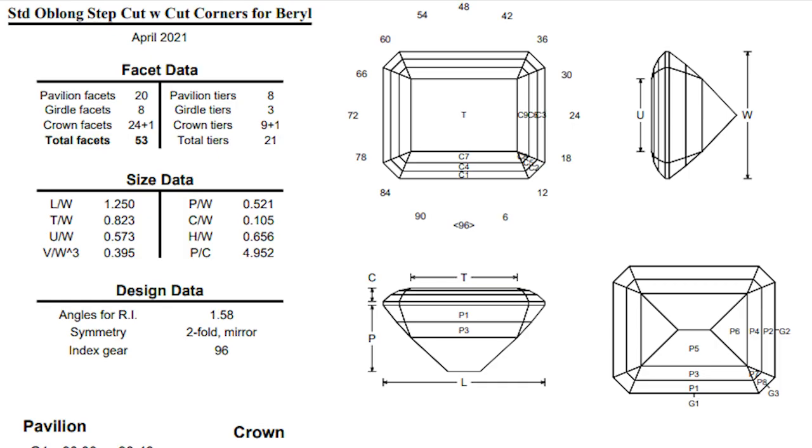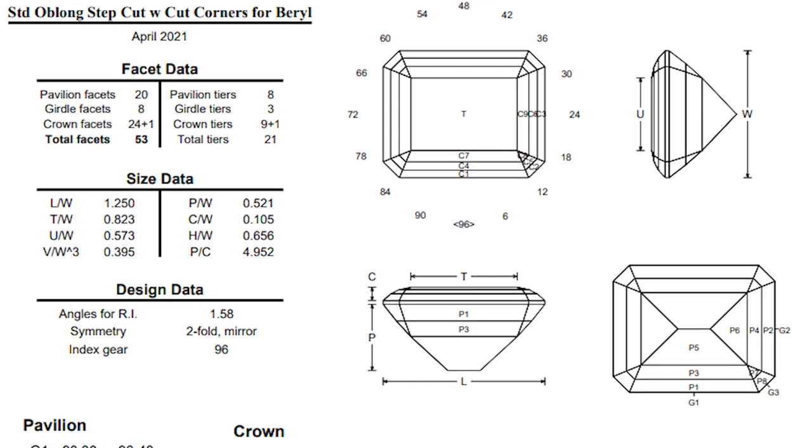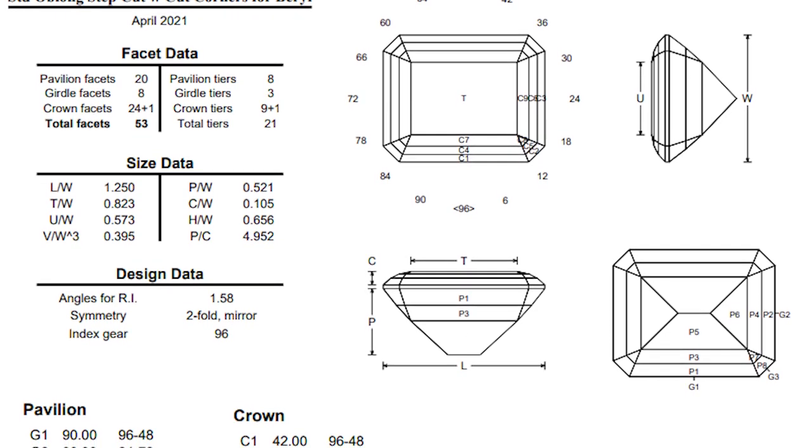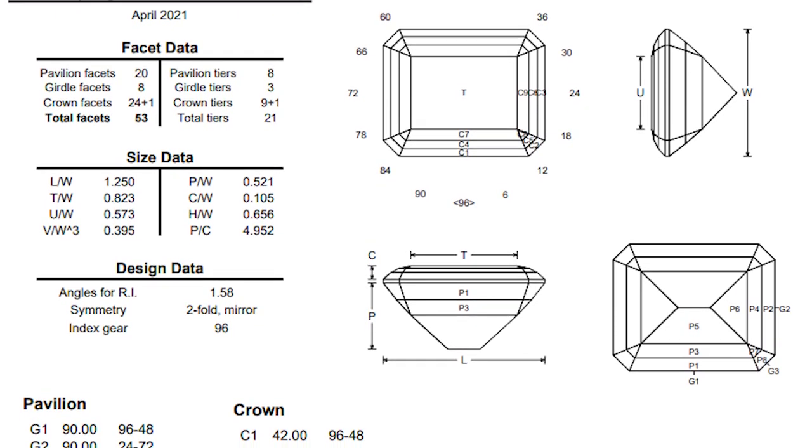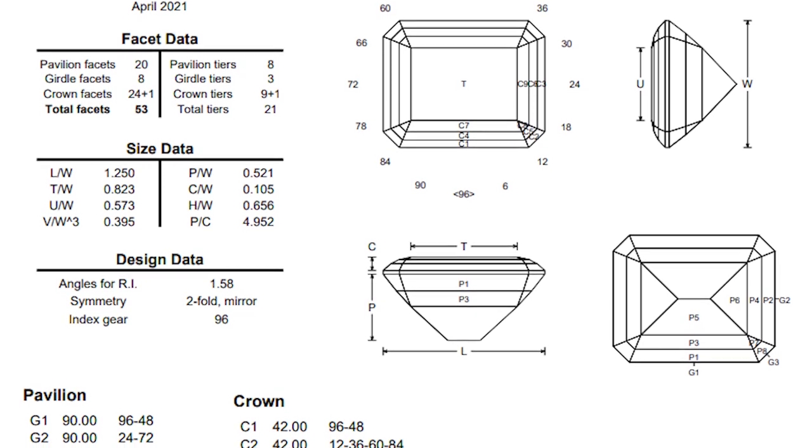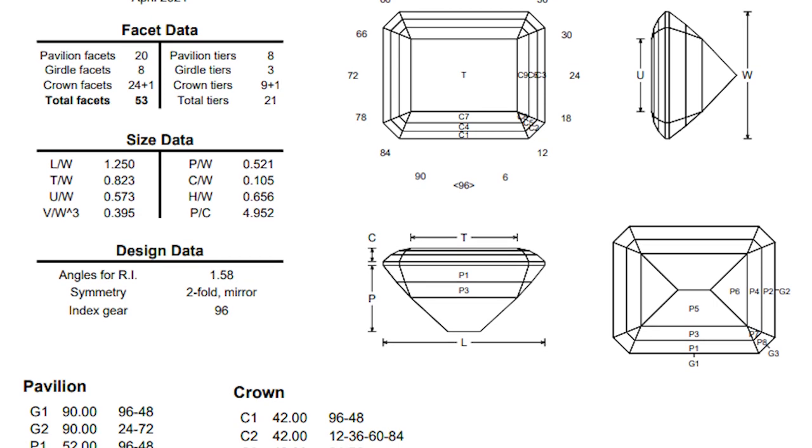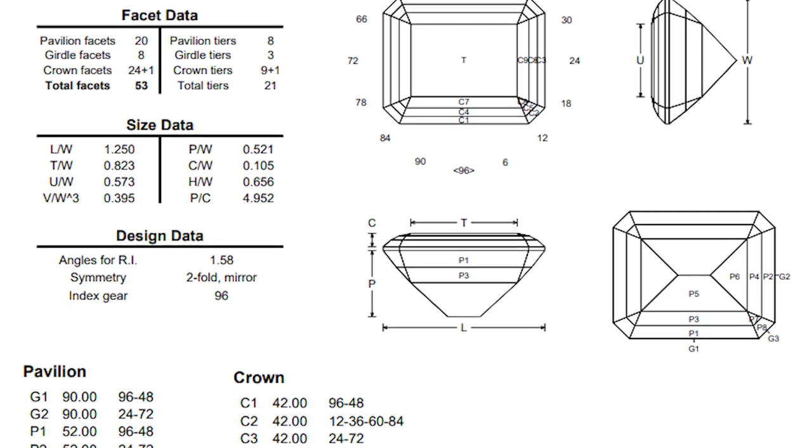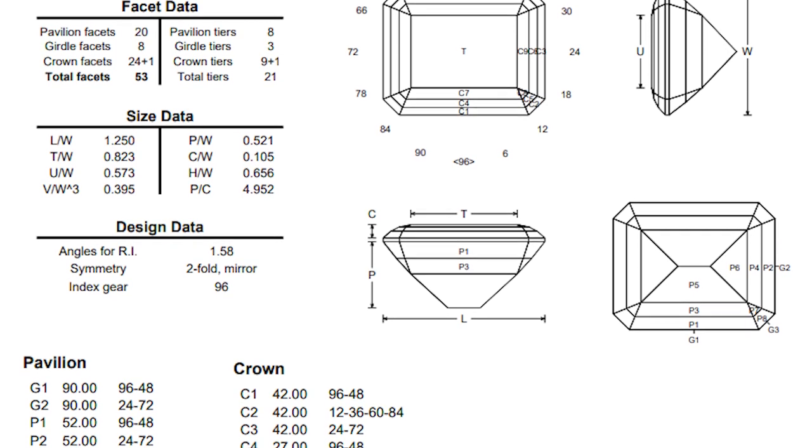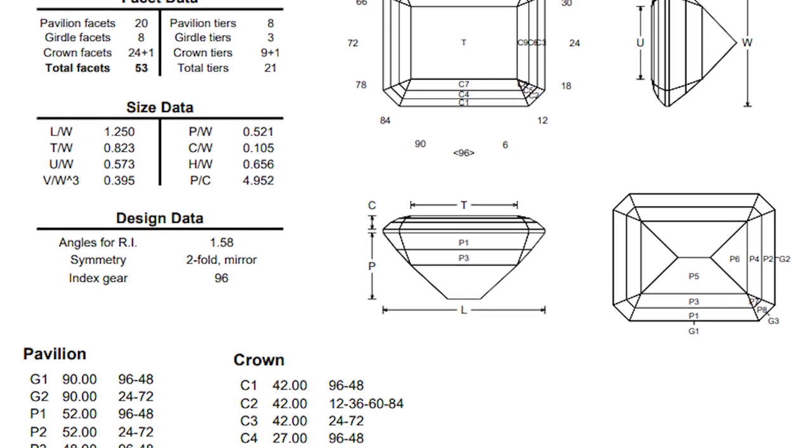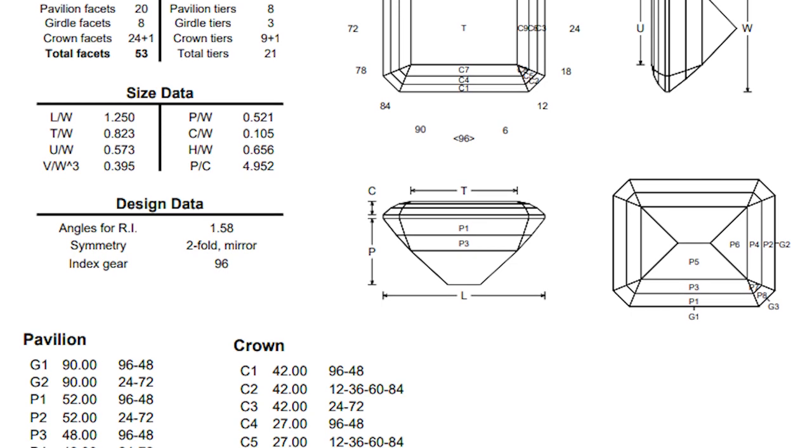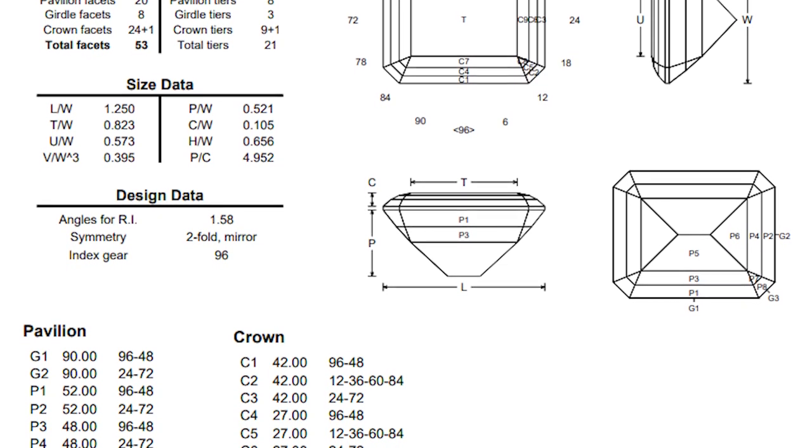For a design, I selected the standard oblong step cut with cut corner design, which is a fairly standard design for emerald or rectangular shaped rough like this morganite is. But then I ran this design through the GemCut Studio, or GCS software, and I adjusted the angles for beryl, or morganite, to enhance the brightness. Here are the angles and cutting instructions that I will use to cut this piece of morganite. I previously prepared a tutorial on GCS showing how to optimize designs for gem material based on the refractive index, so I won't cover how to work with GCS in this video.